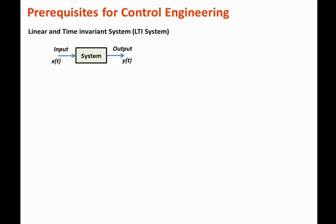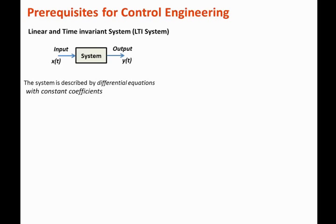If the system is linear and time-invariant, then the relationship between the output and the input is described by a differential equation with constant coefficients. This is very important: linear and time-invariant system means the relationship between output and input is a differential equation with constant coefficients.